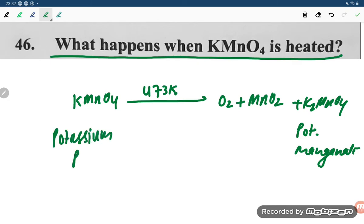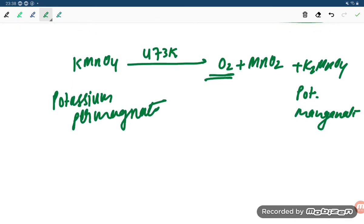If you are heating potassium permanganate, it will give dioxygen. This is the method of preparation. If you are red heating, heating too much...